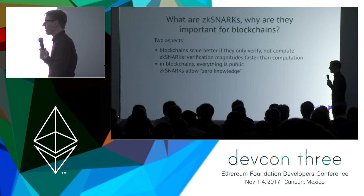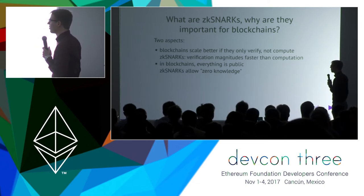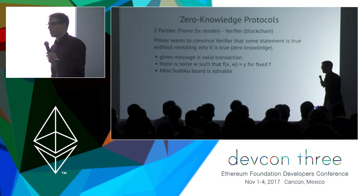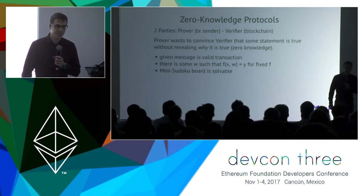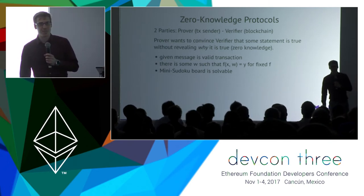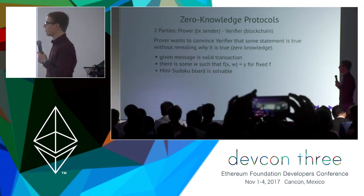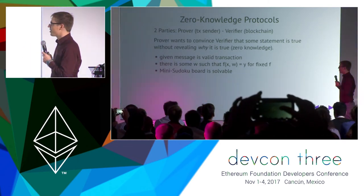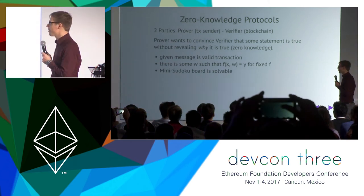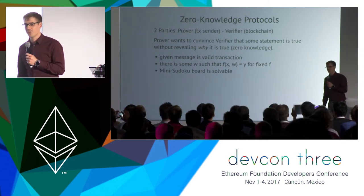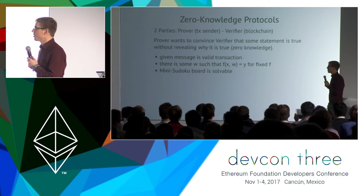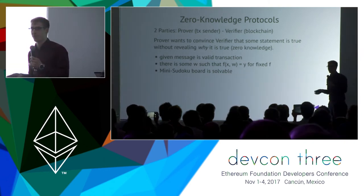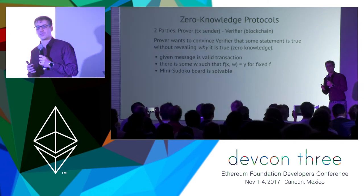Let's start explaining what zero knowledge is. Zero knowledge is a notion that was defined in the area of interactive protocols. In an interactive protocol, you always have two parties: a prover and a verifier. And the prover wants to convince the verifier about a certain fact.